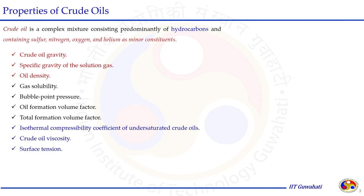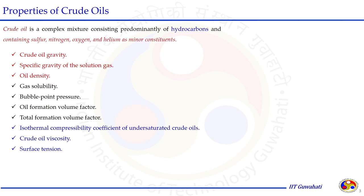Properties of crude oil need to be measured when dealing with crude oil systems for design purposes and estimating reserves. Crude oil is a complex mixture consisting predominantly of hydrocarbons along with impurities including hydrogen, helium, sulfur, and nitrogen. Important properties include crude oil gravity, specific gravity, oil density, gas solubility, bubble point pressure, oil formation volume factor, compressibility coefficient, viscosity, and surface tension.